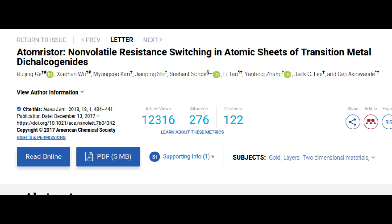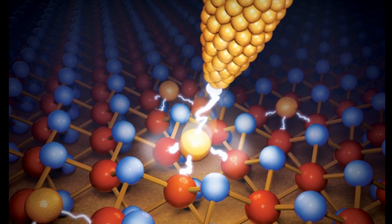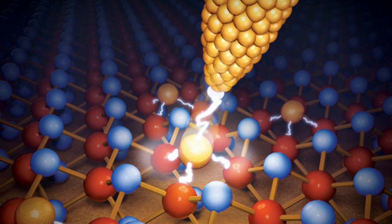The original device, dubbed an atomristor by the research team, was at the time the thinnest memory storage device ever recorded with a single atomic layer of thickness. But shrinking a memory device is not just about making it thinner but also building it with a smaller cross-sectional area.